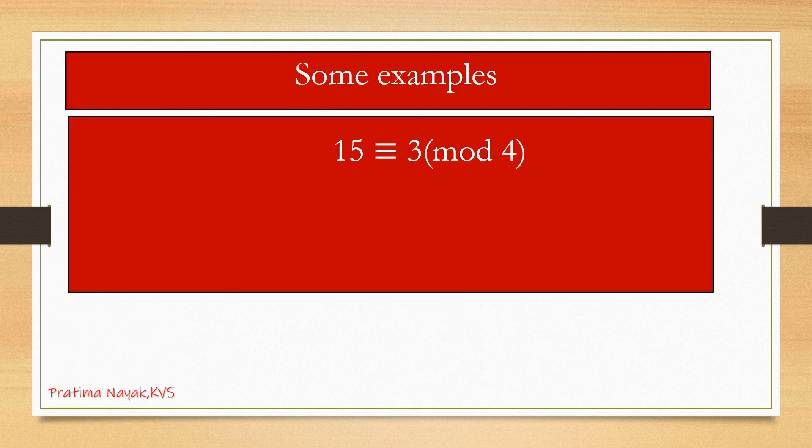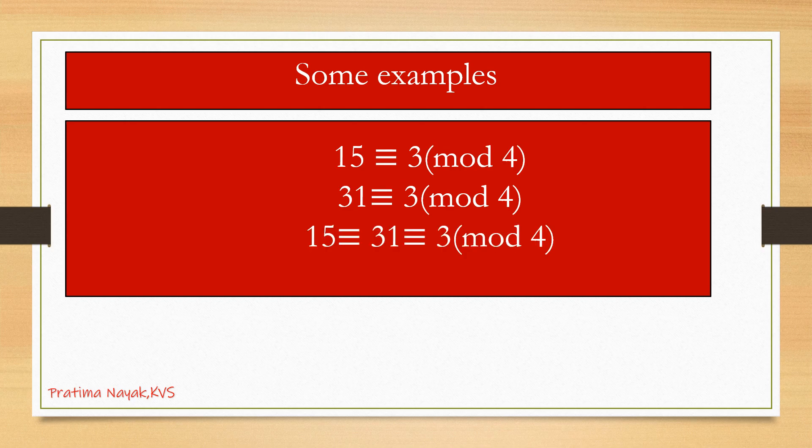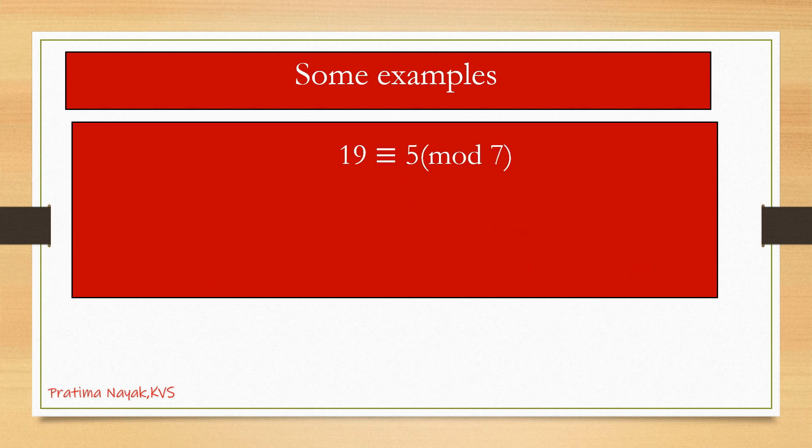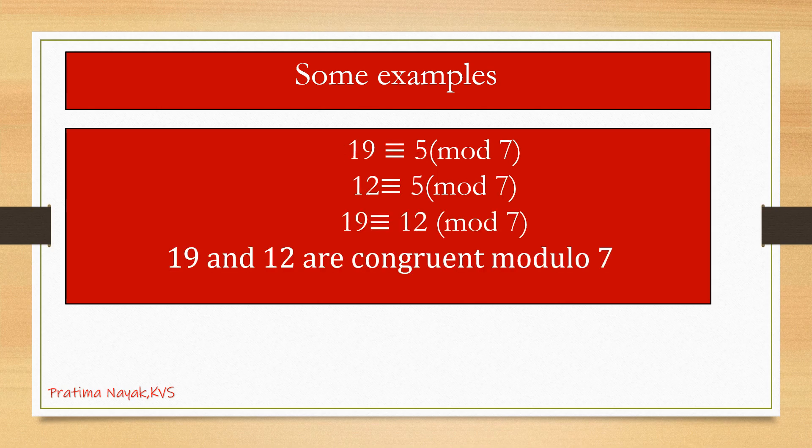Some examples: 15 ≡ 3 (mod 4). That means when 15 is divided by 4 we get the remainder 3. Similarly, 31 divided by 4 we get again the remainder 3. Four sevens are 28, remainder is 3, so 15 and 31 are congruent to 3 modulo 4. Let us take another example: 19 ≡ 5 (mod 7), 12 ≡ 5 (mod 7). That means 19 and 12, when they are divided by 7, each gives the remainder 5, so 19 and 12 are congruent modulo 7.